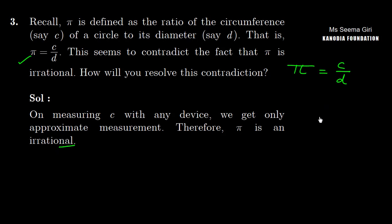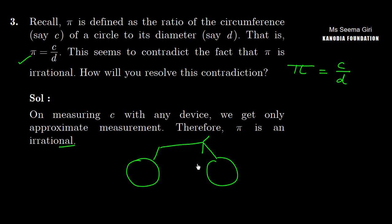This has said that if we take any device — suppose I have said that this is one cycle — therefore pi is an irrational.